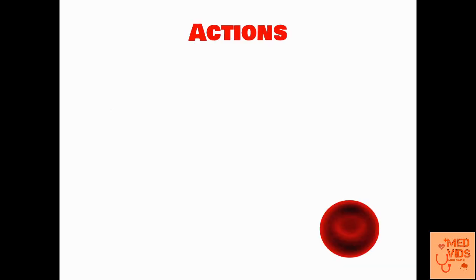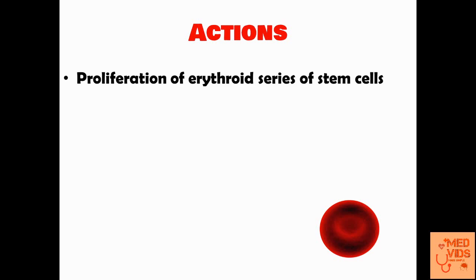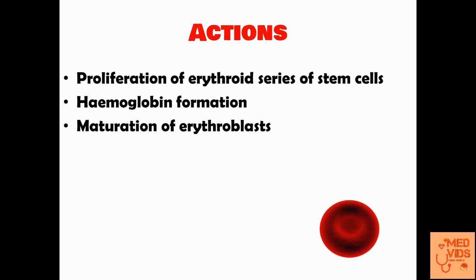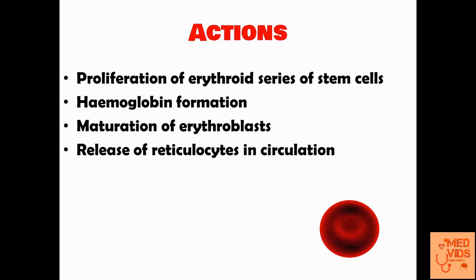Erythropoietin carries out various effects to counter hypoxia. This includes proliferation of the erythroid series of stem cells specifically in the bone marrow. It also increases hemoglobin formation, causes maturation of the precursors of red blood cells called erythroblasts, and enhances the release of the precursor red blood cells called reticulocytes into the circulation.